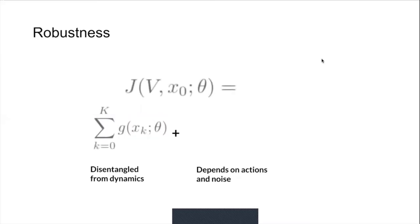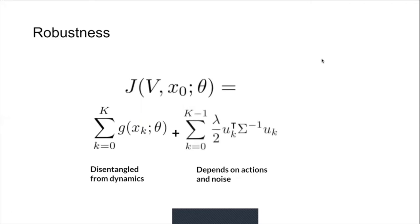Mathematically, the state cost is represented in terms of the current state and the parameter theta, and the control cost is modeled as a quadratic term.